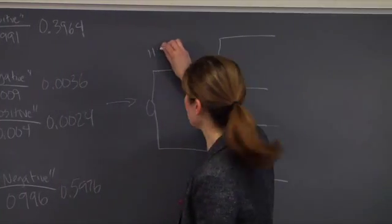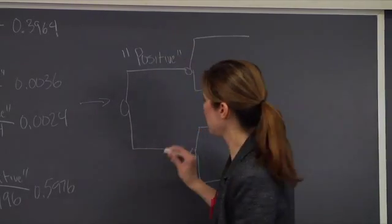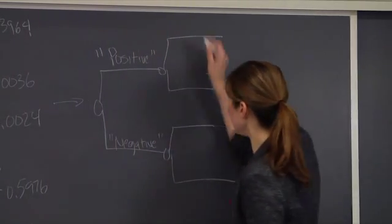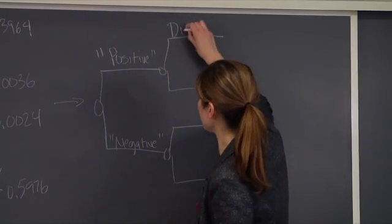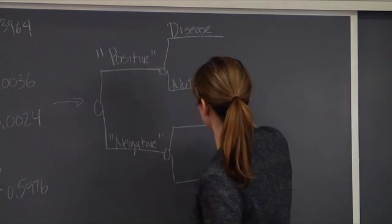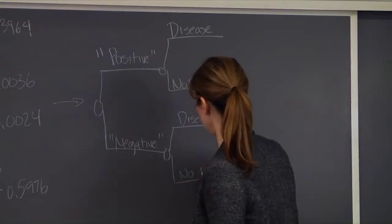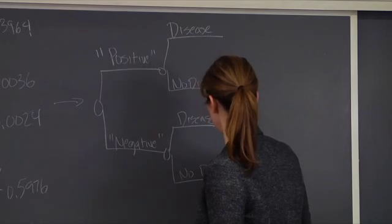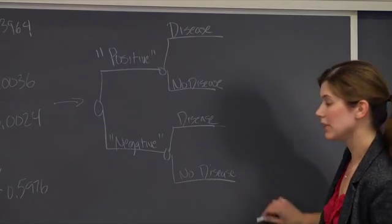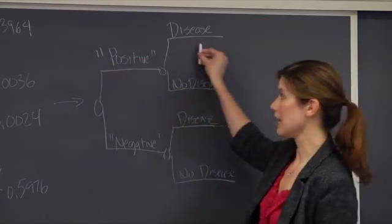So just like last time now, the test results are going to go first. So a patient can either have a positive or a negative test result, and then they can either have the disease or not. Just like last time, we want to first start by filling out the right-hand side of the tree, and then we're going to go through and fill it out from left to right.